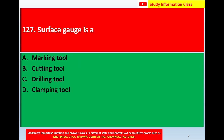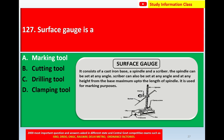Question number 127: A surface gauge is — Option A: Marking tool, Option B: Cutting tool, Option C: Drilling tool, Option D: Clamping tool. The correct answer is Option A: Marking tool. A surface gauge consists of a cast iron base, a spindle, and a scriber. The spindle and scriber can be set at any angle and at any height from the base up to the length of the spindle. It is used for marking purposes.